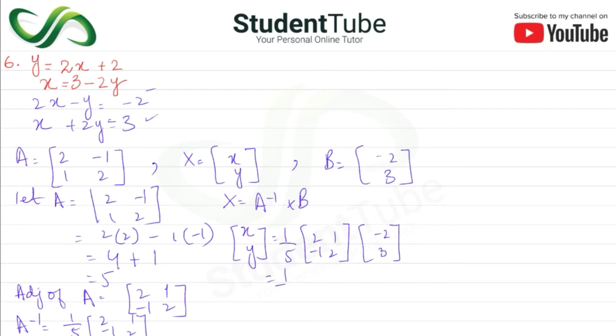X and y equals A inverse, which is 1 upon 5 times the matrix [2, 1; -1, 2], multiplied by B which is [-2; 3]. So these multiply: 2 times -2 plus 1 times 3, and -1 times -2 plus 2 times 3.